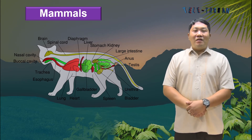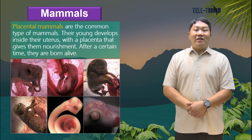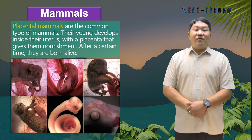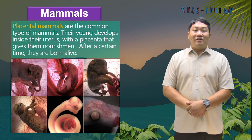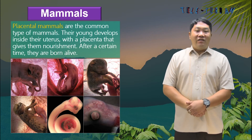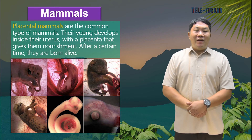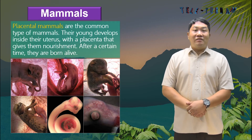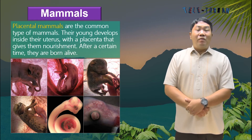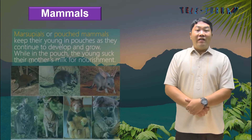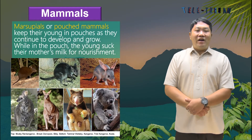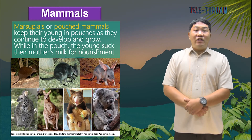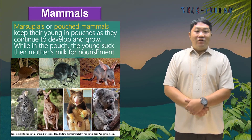For most mammals, the young develops inside the female's body and is born in a form that resembles the parents, such as marsupials and placental mammals. Placental mammals are the most common type; their young develops inside the uterus with a placenta that provides nourishment, and after a certain time they are born alive. Marsupials are pouched mammals that keep their young in their pouches as they continue to develop and grow. While in the pouch, the young suck their mother's milk for nourishment.